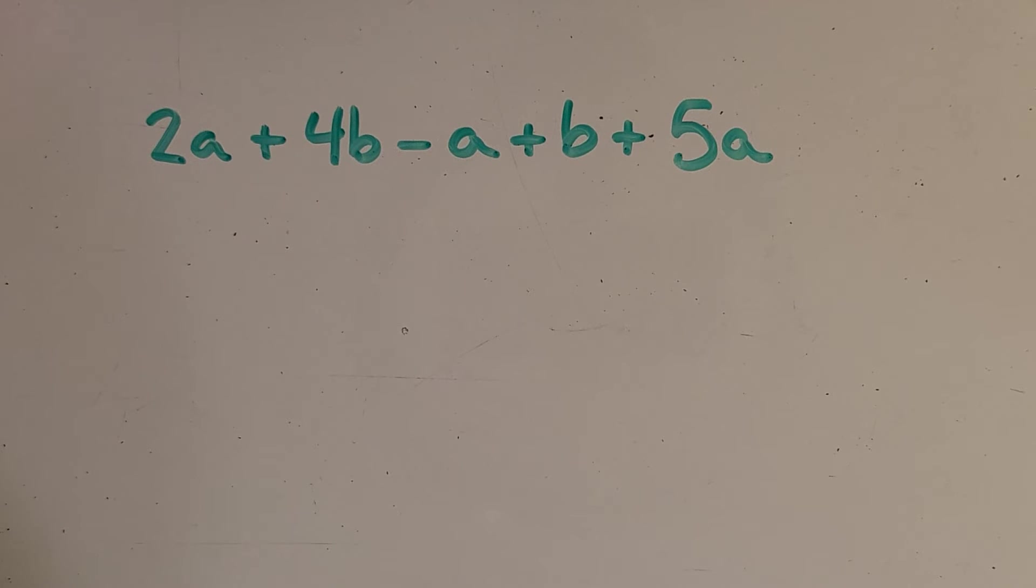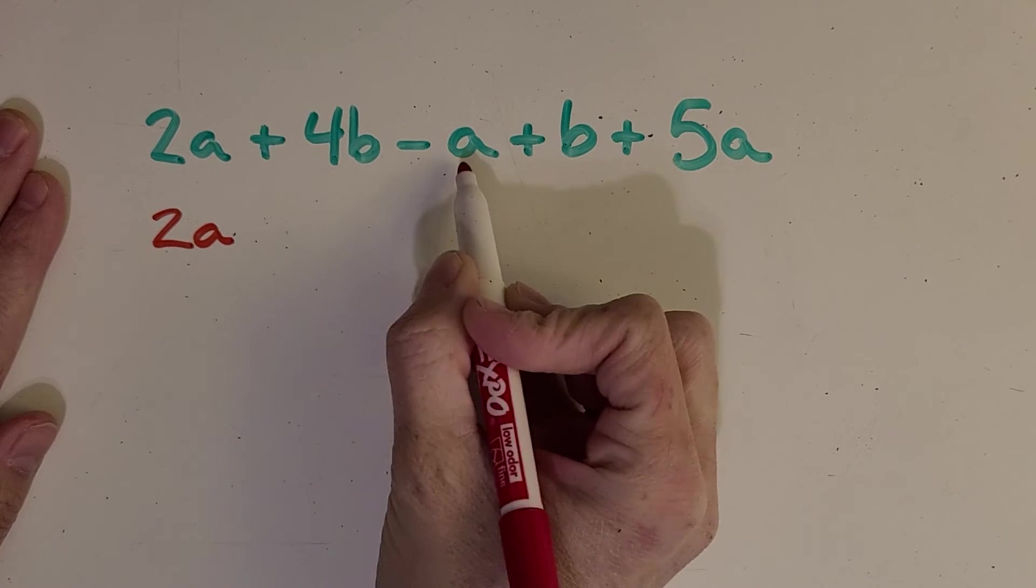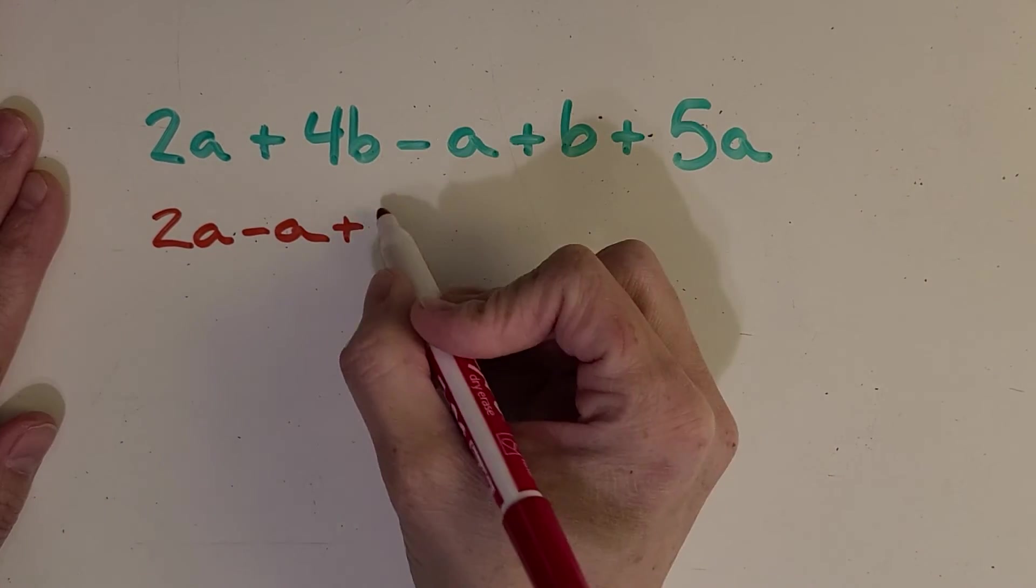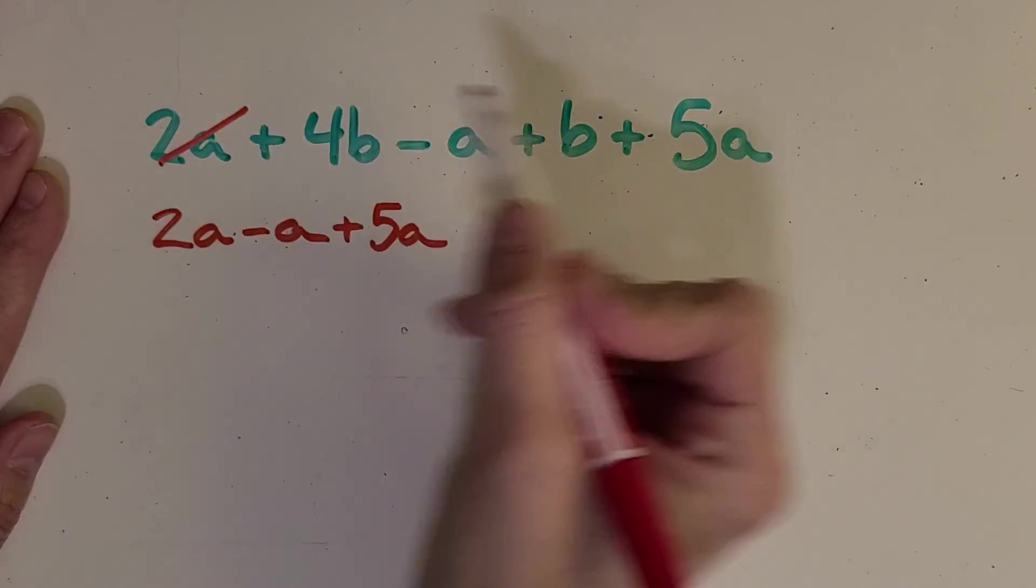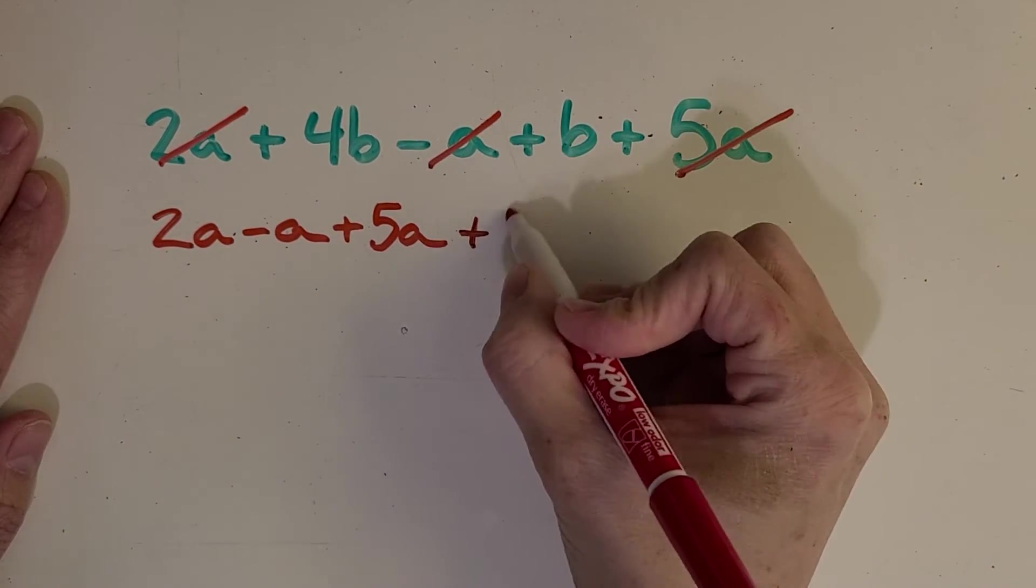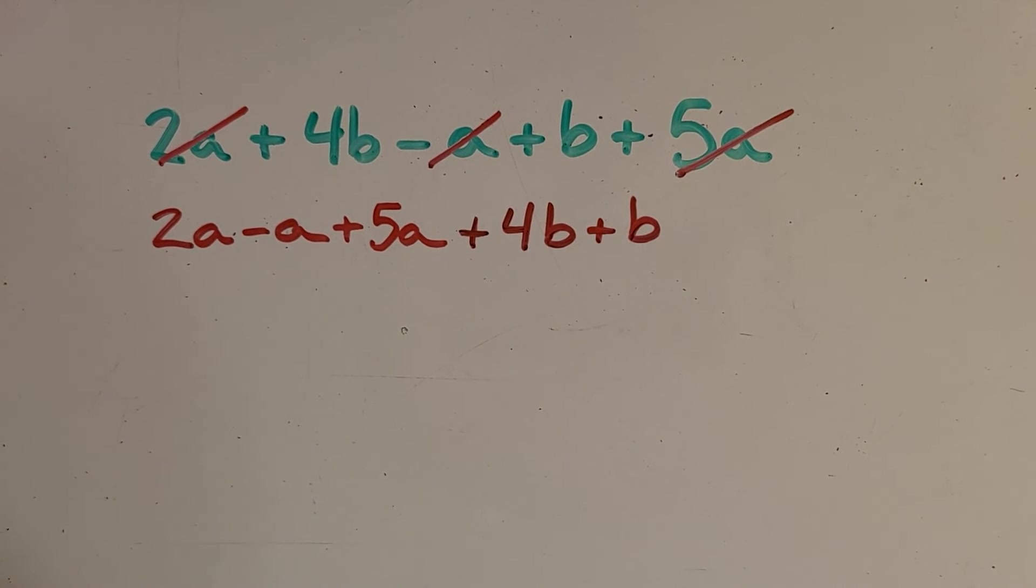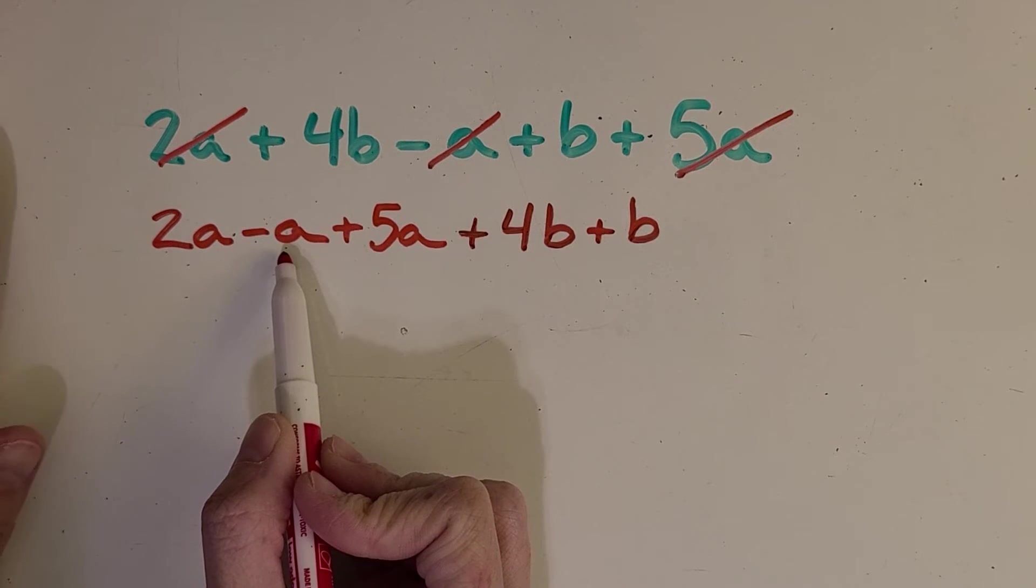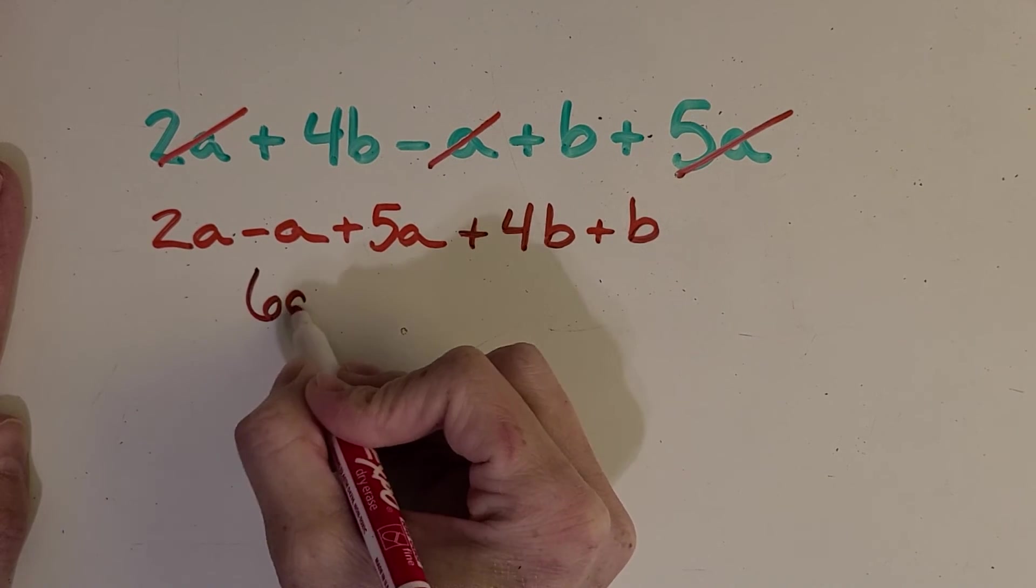All right, let's check your work. First step I do is rearrange. I'm going to get all of the A's next to each other, and I'm keeping the symbol, you know, the operation symbol, with the term. Okay, got all the A's. Now I'm going to get those B's, plus a B. Okay, now I can start working with them. So what does this mean again when there is no coefficient with this A and this B over here? What does that mean? Okay, you got it, it's just one of that thing. So two minus one is one, plus five is six, 6A.